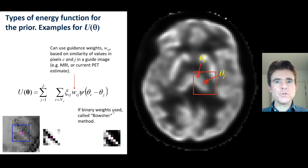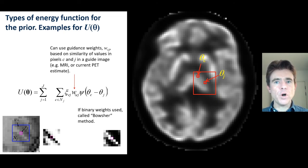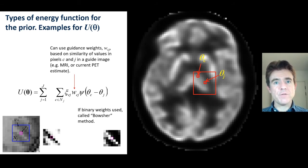A popular method called the Bauscher method defines these weights to be either one or zero. The key parameter is to decide how many weights to have — how many values of one to have in the similarity map.